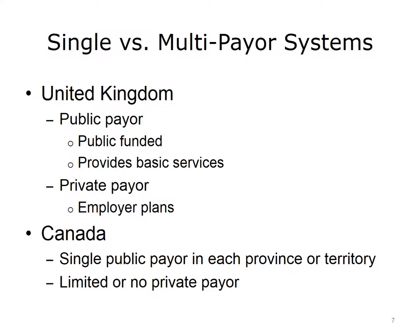Other countries also operate mixed delivery systems. Two of these are the United Kingdom and Canada. However, the methods that these countries employ to deliver and finance healthcare services is quite different from how it is done in the U.S. Both the United Kingdom and Canada fund basic healthcare primarily through general taxation. However, the United Kingdom has a multi-payer system that includes private payers, while Canada has a single-payer in each province and territory and relies little on a private system.